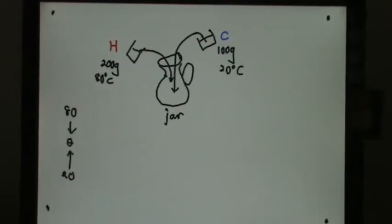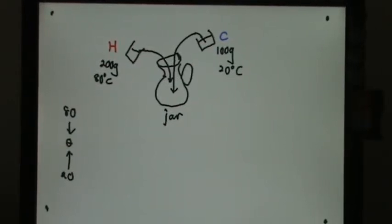When we are mixing two similar substances, in this case we have hot water indicated by the red H and cold water indicated by the blue C. The hot water has 200 grams at 80 degrees Celsius.